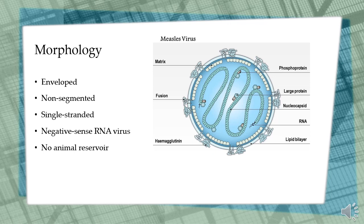The measles virus has two glycoprotein spikes that play a significant role in pathogenesis: the Fusion protein (F) and Hemagglutinin protein (H). Fusion proteins are responsible for the fusion of the virus with host cell membranes and viral penetration. Hemagglutinin protein is responsible for the binding of the virus to cells. The large protein and nucleoprotein together form the nucleocapsid that covers the viral RNA.